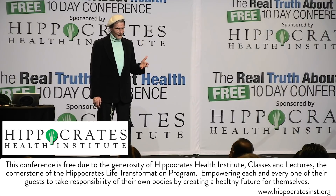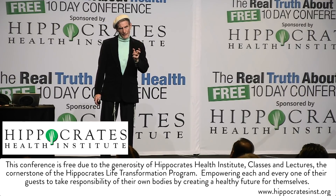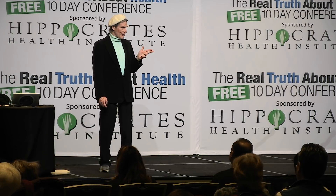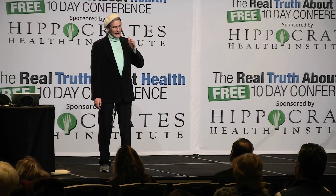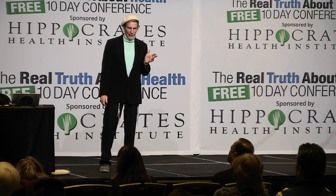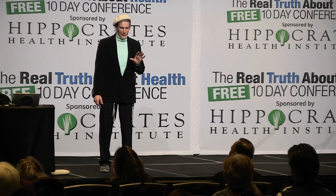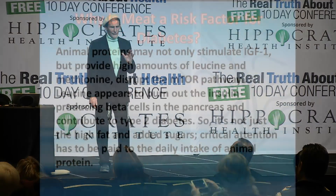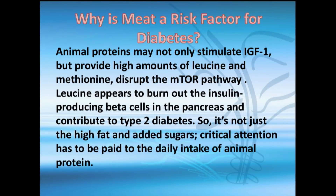We have to understand this driving inflammatory force. Meat contributes to it, and the AGEs in the meat contribute to it. It's not just the animal fat — it's also the leucine that specifically kills the beta cells of the pancreas and disrupts the mTOR pathway.